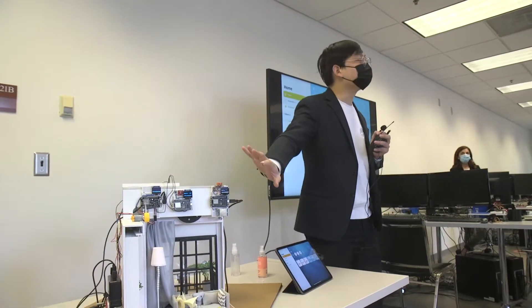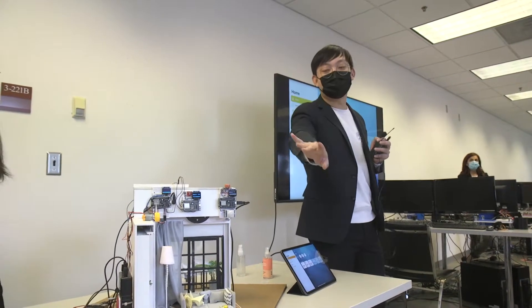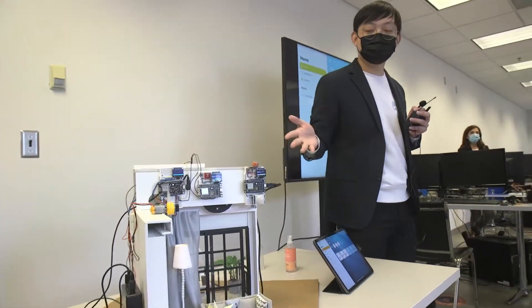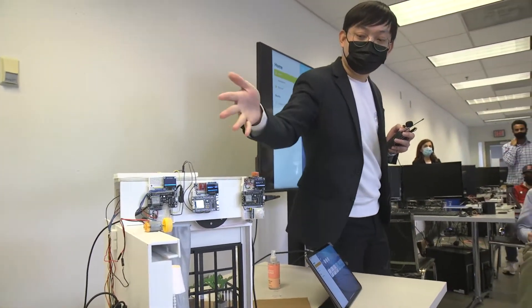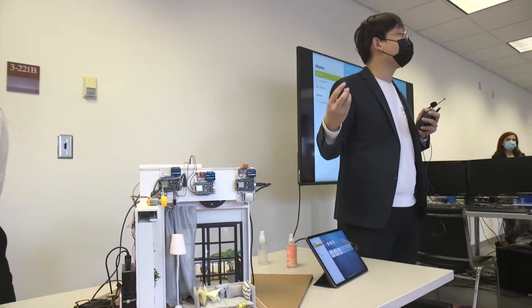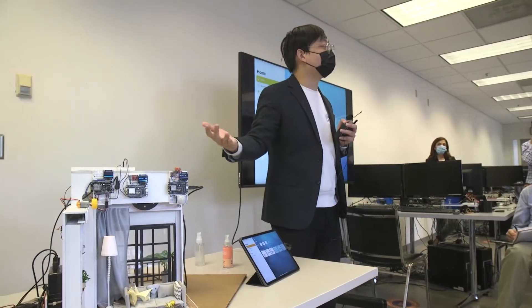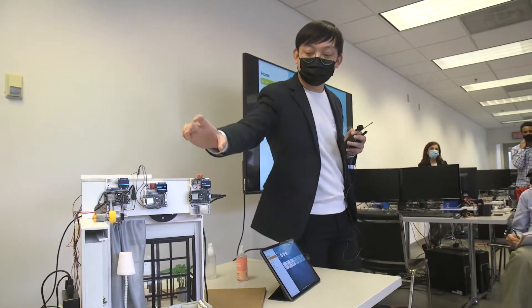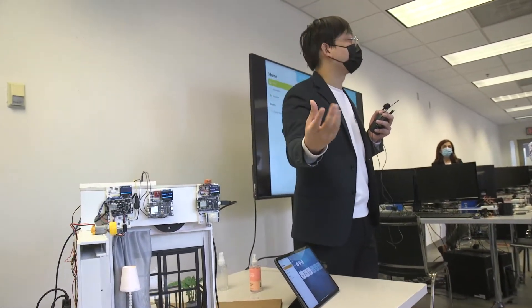We have ten smart things here: four lights, a DC fan, a curtain, and three sensors. We can add any sensor we want into our system by simply adding more NodeMCU microcontrollers and more sensors.